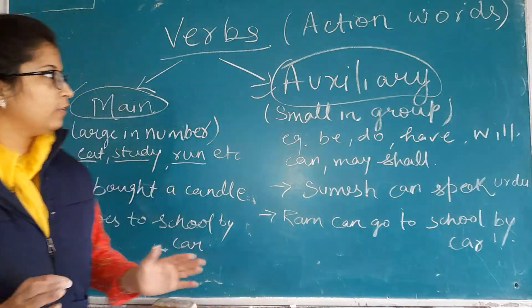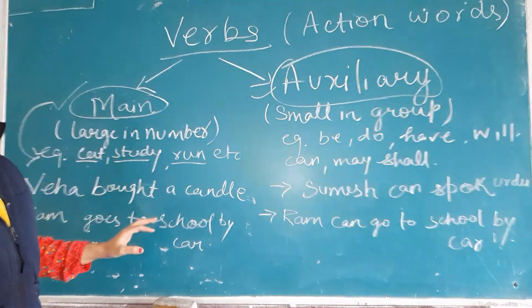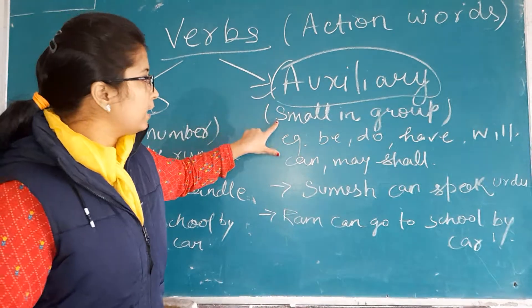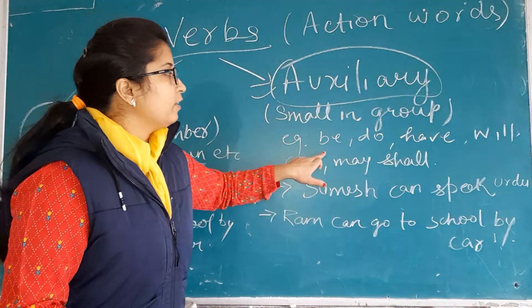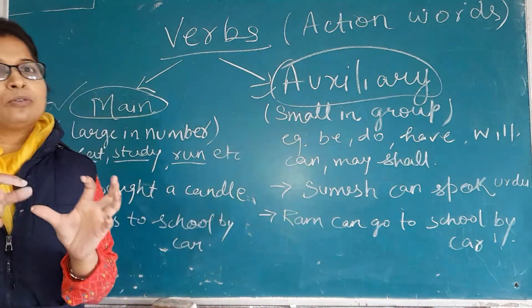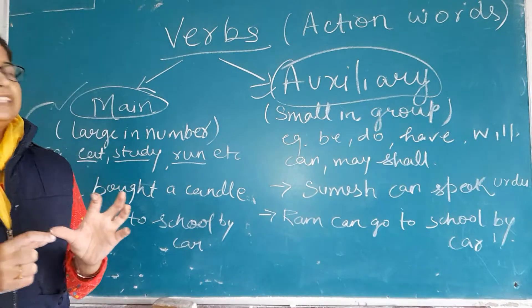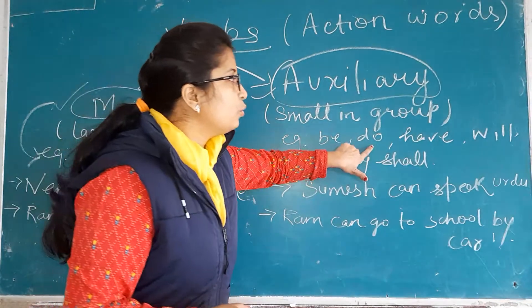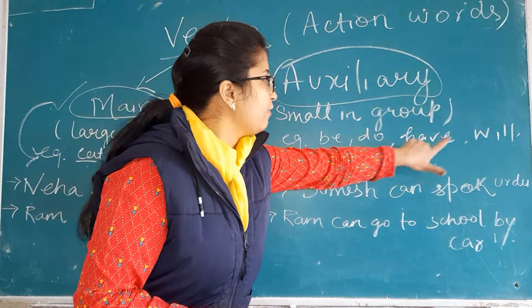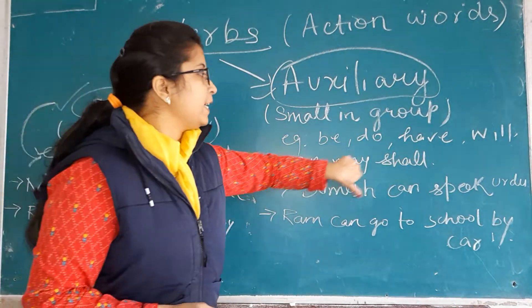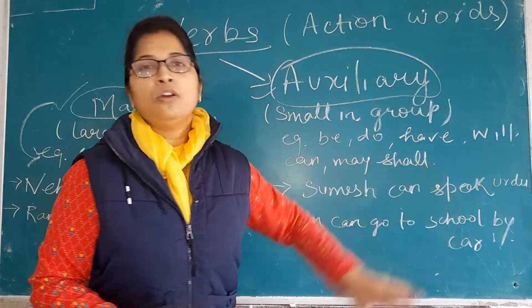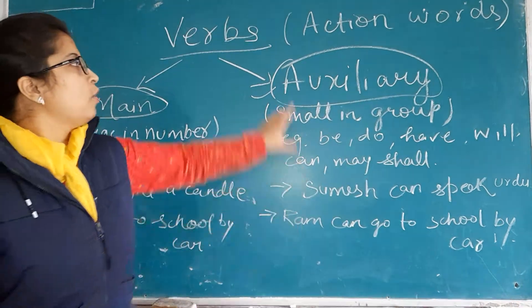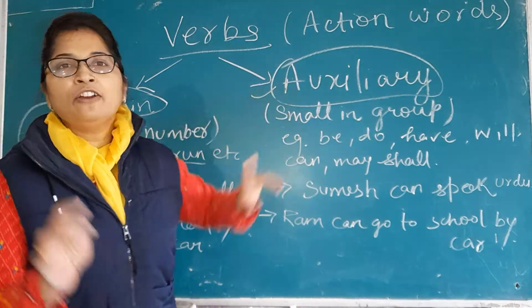Okay, all of these. But auxiliary verbs are like: be, do, have, will, can, make, shall. All of these are known as auxiliary verbs.